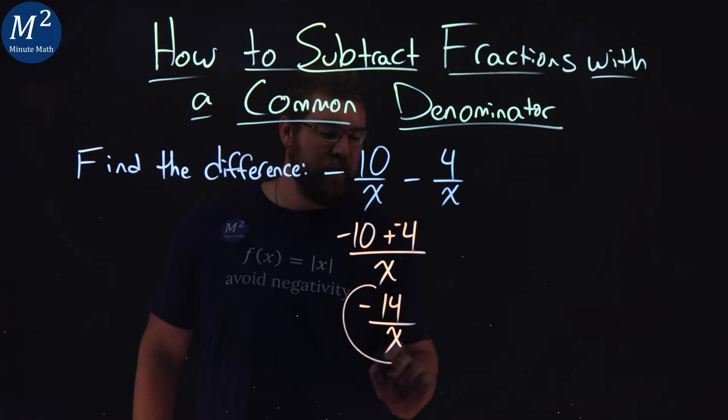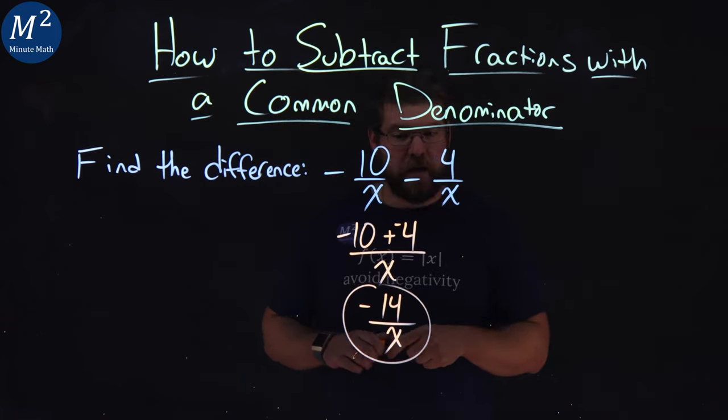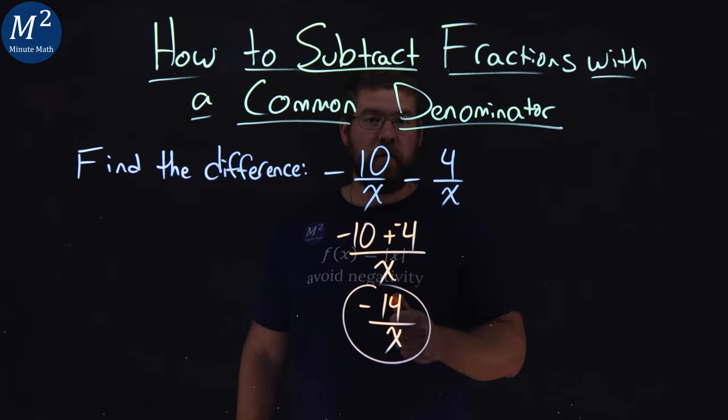And that's it. We can't simplify this anymore. And so negative 10 over x minus 4 over x simplifies to being negative 14 over x.